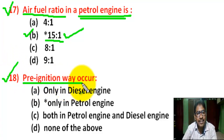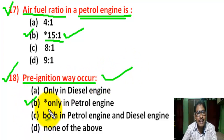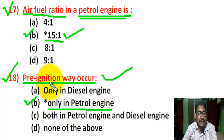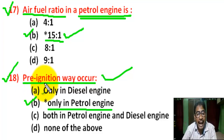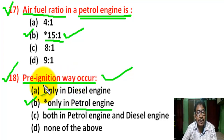Question number 18: Pre-ignition occurs — there are four options. Correct answer is B — only in petrol engines. Pre-ignition is a situation in which the fuel-air mixture in a petrol engine ignites before the actual timing, due to heat from engine components.